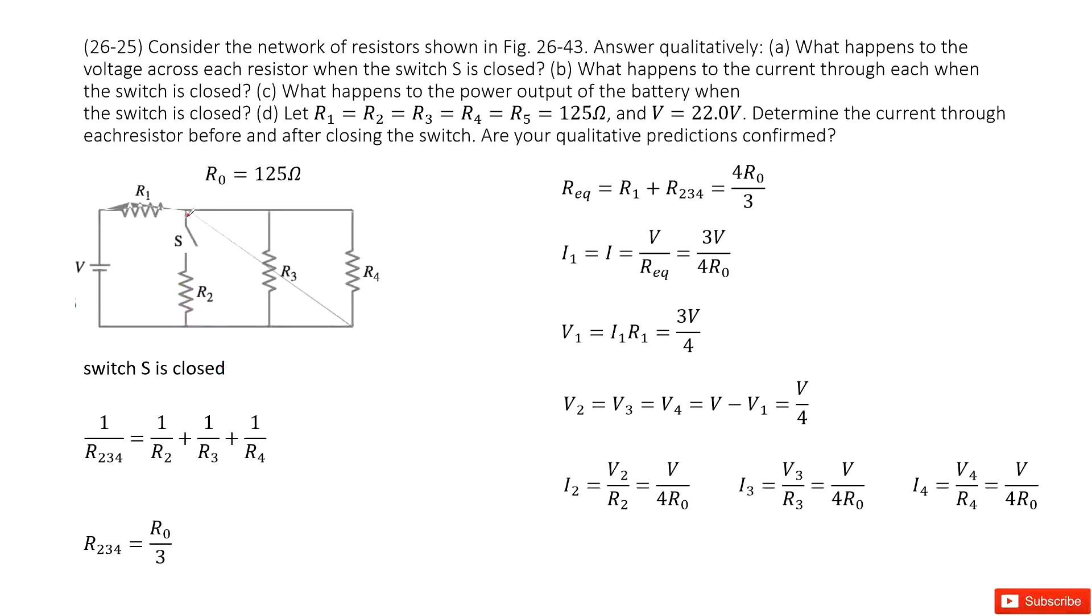Now switch is closed. That means resistors R2, R3, R4 are in parallel connection. Now we can get the equivalent resistance for R2, R3, R4 in this function. We solve this function and get R234 as R0 over 3.